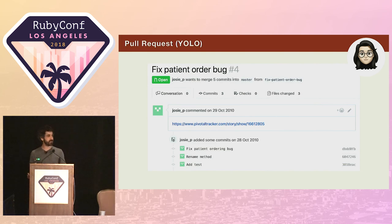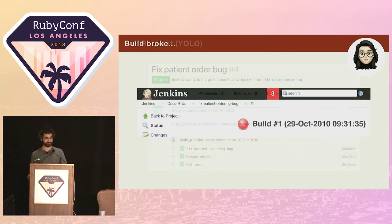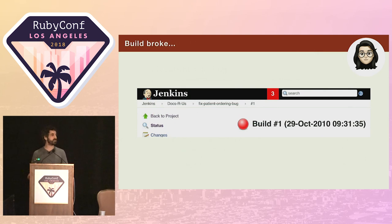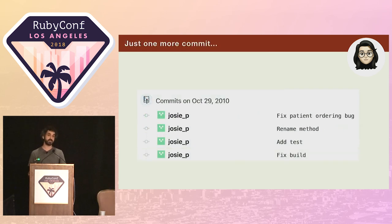She uses a link to the Pivotal Tracker story for the bug for the description, because all the details are there already and there doesn't seem much point repeating the information. A few moments later she gets a notification from the CI server. Looks like the build's broken on her branch. She discovers she'd failed to update an integration test that also needed updating.